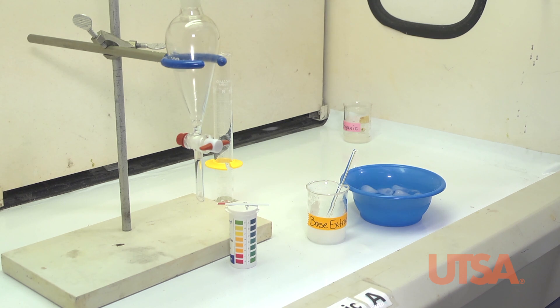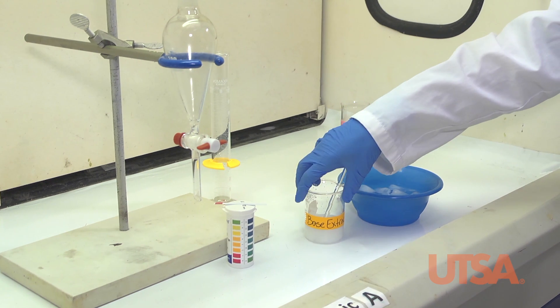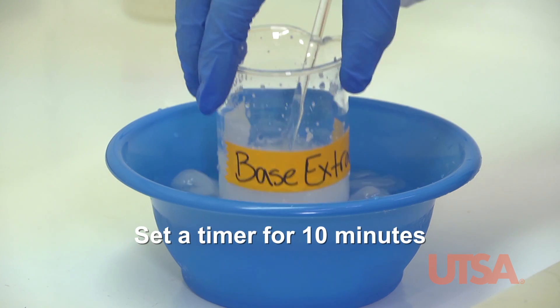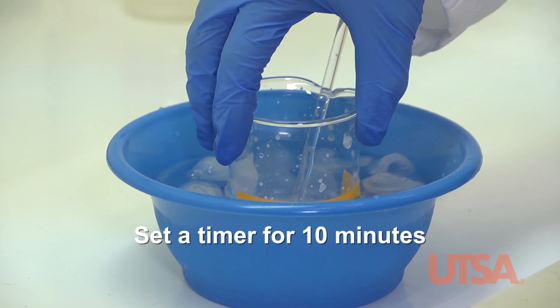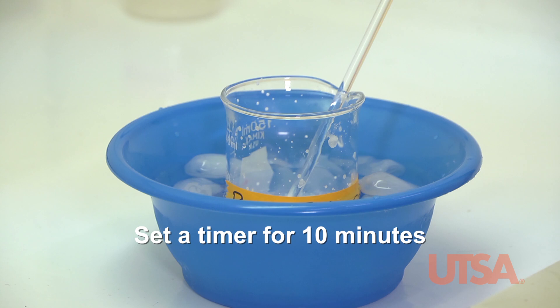Once the base extract is at room temperature, place it in an ice bath and set a timer for 10 minutes. More precipitate will continue to form as the base extract cools.